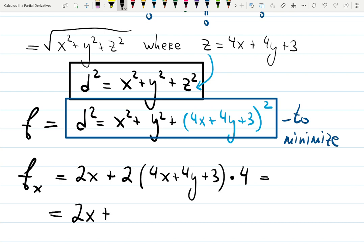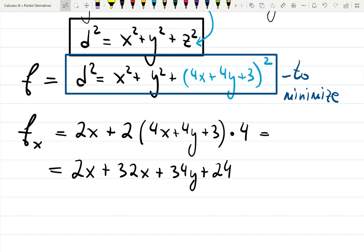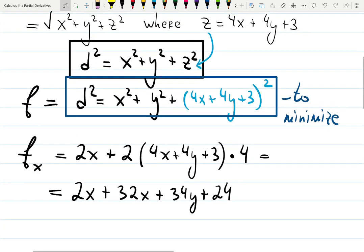Let me simplify: 2x plus 2 times 4 is 8, 8 times 4 is 32x, plus 2 times 4 times 4 is 34y, plus 3 times 2 times 4 is 24. So with respect to x, it's 34x plus 32y plus 24.